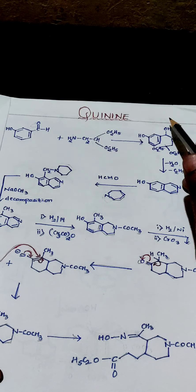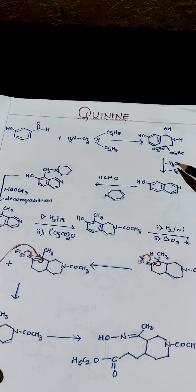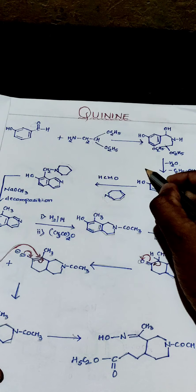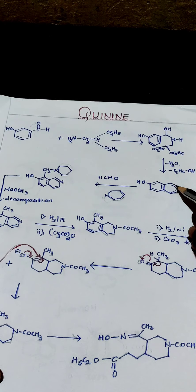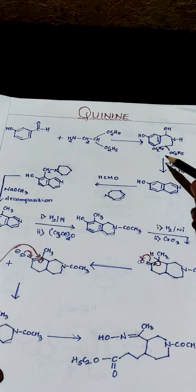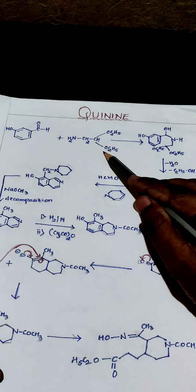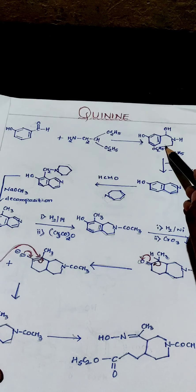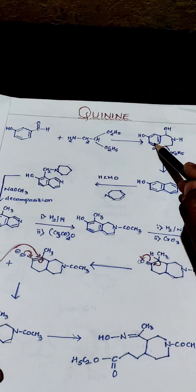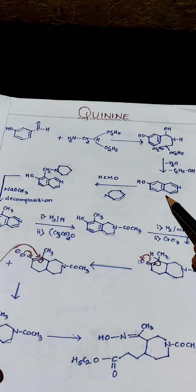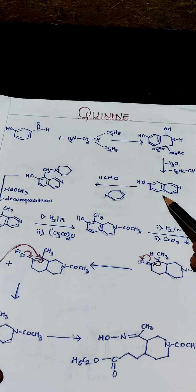A water molecule is removed, and cyclization followed by aromatization gives this product. Just do cyclization, do aromatization, and you get this quinoline ring.